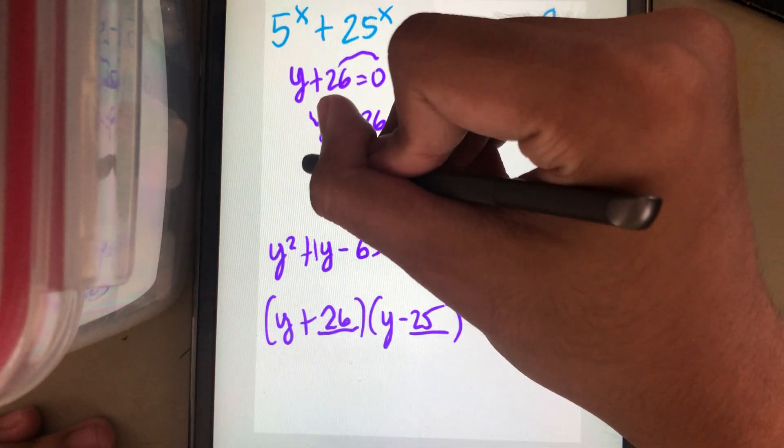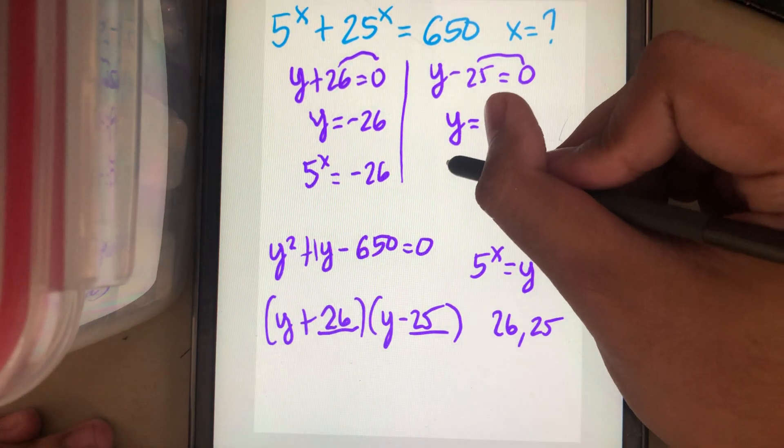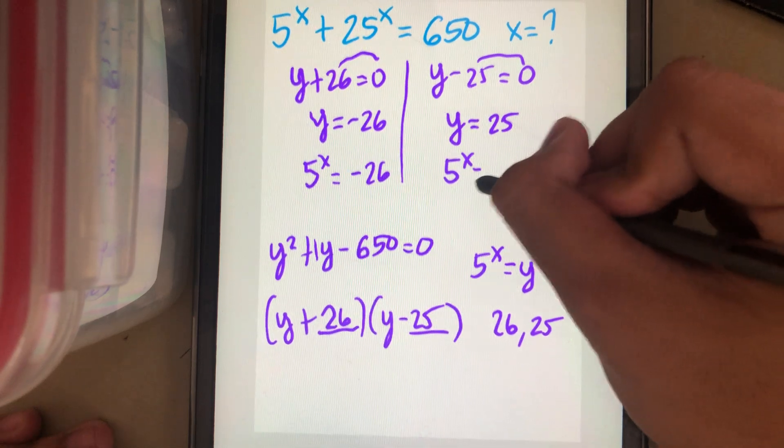So we'll replace the y by 5 power x. Negative 26. And then, 5 power x is equal to 25.